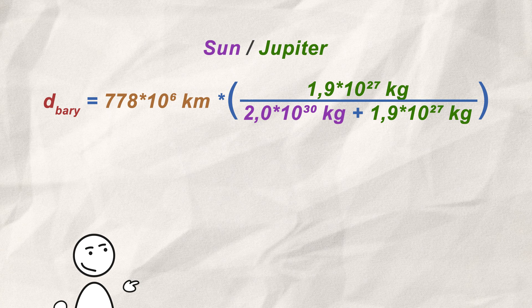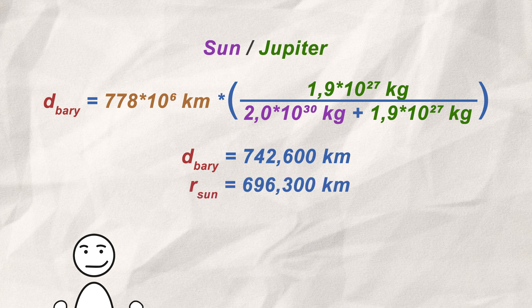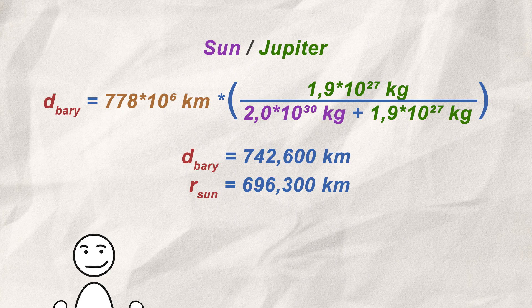If we put in the corresponding numbers, we can see that the barycenter is pulled towards Jupiter by around 742,600 kilometers. But our Sun's radius is only 696,300 kilometers.